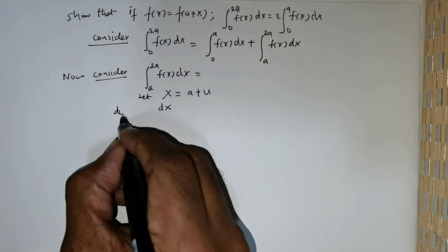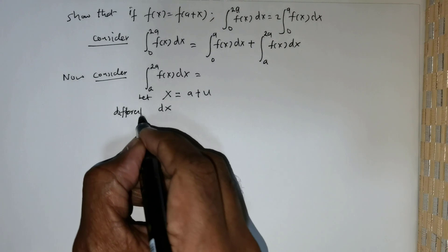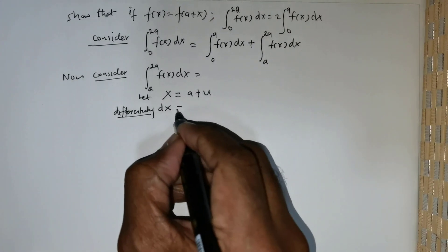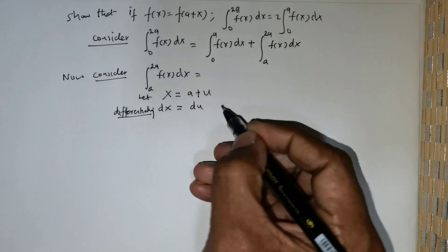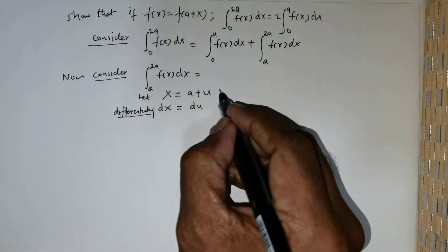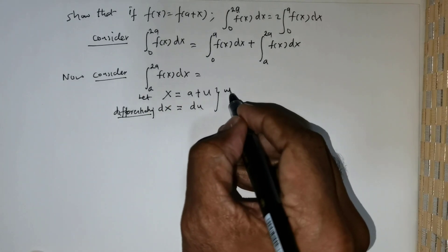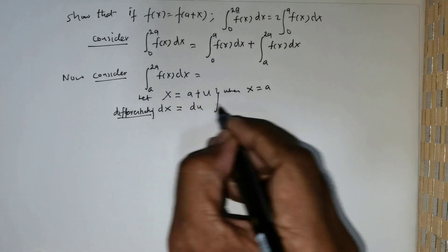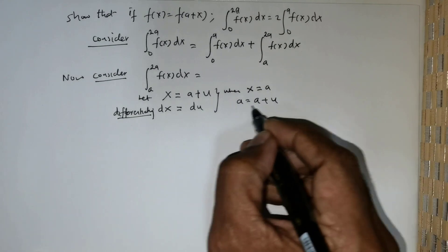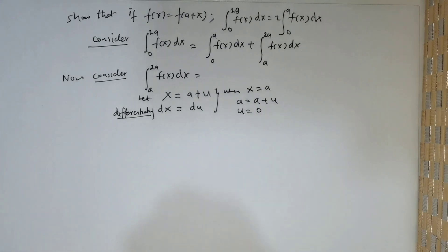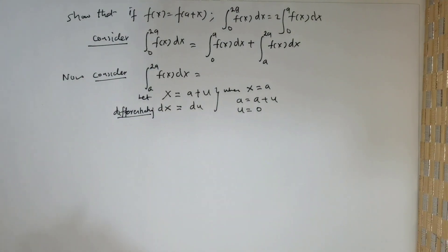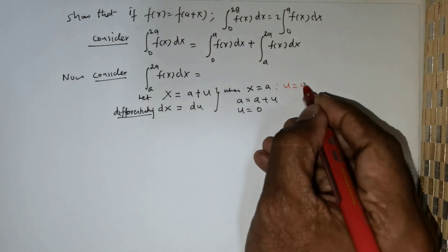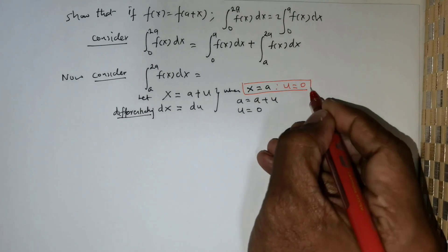Differentiating, we get dx equal to du. Now for the limits: when x is equal to a, we get a equal to a plus u, which means u is equal to 0. So when x equals a, u equals 0. That is one limit.